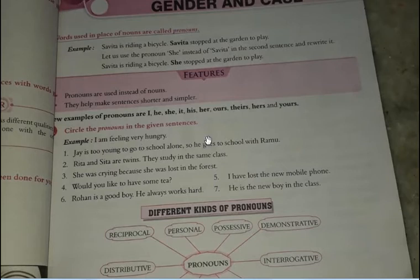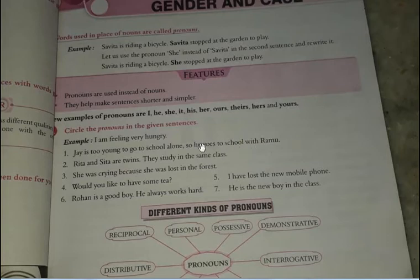First question: circle the pronouns in the given sentences. For example: 'I am feeling very hungry' — circle 'I'. 'J is too young to go to school alone, so he goes to school with Ramu' — circle 'he'. You will do this in your book only — just circle the pronouns.